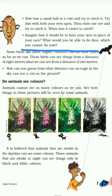Imagine how it would be to have your eyes in place of your ears, as shown in the picture. What would you be able to do then that you can't do now? When your eyes are at your ears' place, you could see your left and right side without moving your neck.